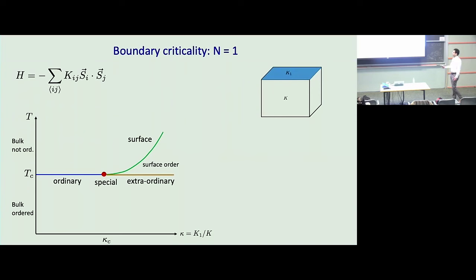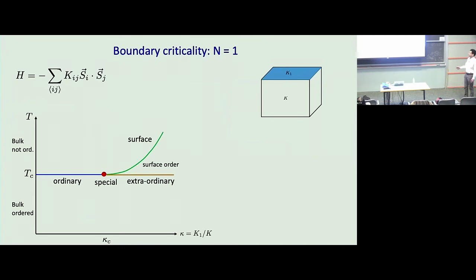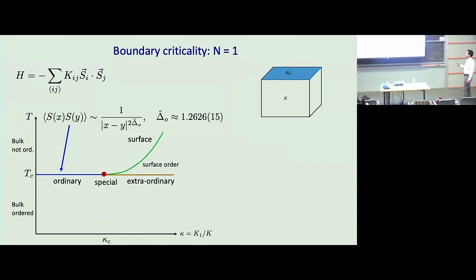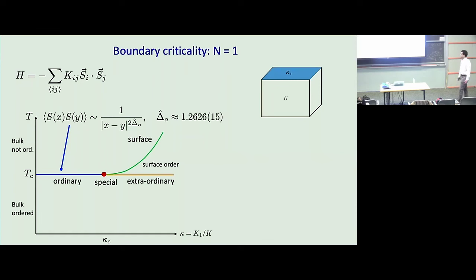Let's begin with the simplest case: the 3D Ising model. We know there is a bulk critical temperature, and I want to understand what happens near the boundary as I cross it. If the surface coupling is not too large, the surface will order at the same temperature as the bulk. This is known as the ordinary boundary universality class, described by a boundary conformal field theory. The spin-spin correlation on the boundary at the bulk critical temperature shows power-law decay with an exponent known from Monte Carlo, epsilon expansion, and bootstrap.